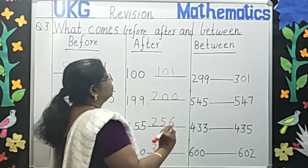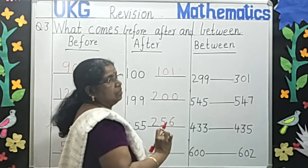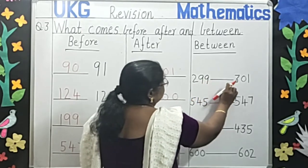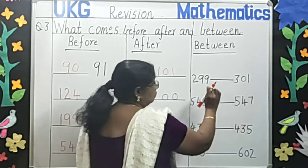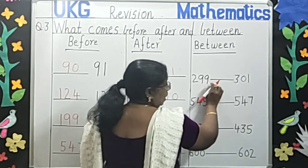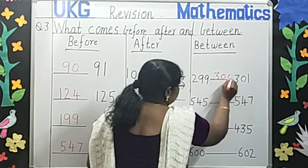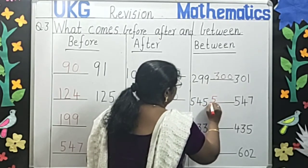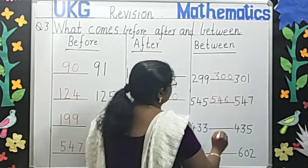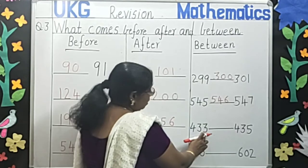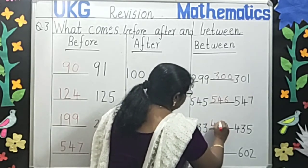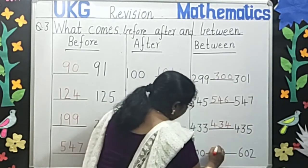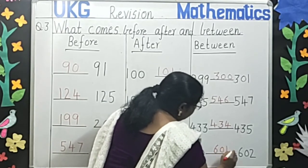Now next one is what comes between this number. Two hundred and ninety-nine and three hundred and one. Which number comes in between? Two hundred and ninety-nine, after three hundred. Very good. Next, five hundred and forty-five and five hundred and forty-seven — five hundred and forty-six. Next, four hundred and thirty-three and four hundred and thirty-five — four hundred and thirty-four. Six hundred and six hundred and two — six hundred and one.